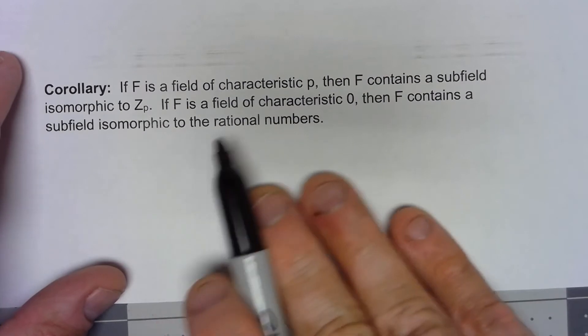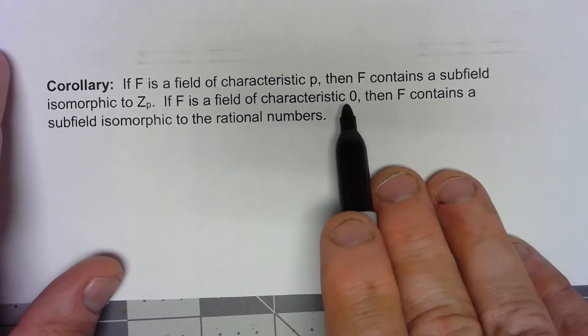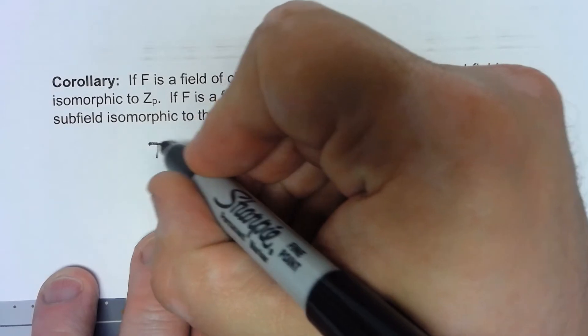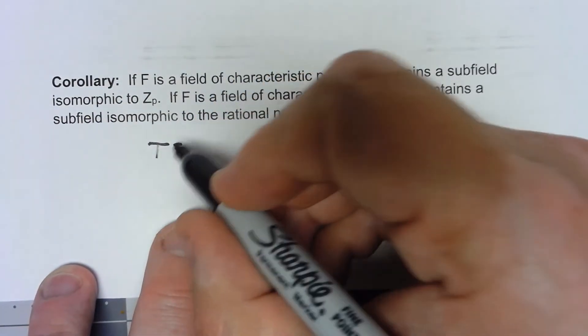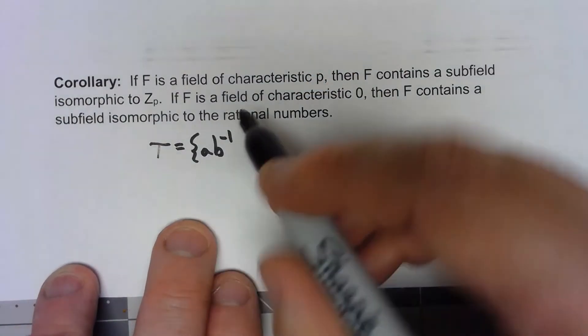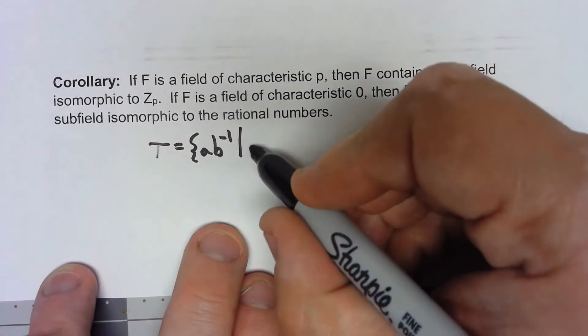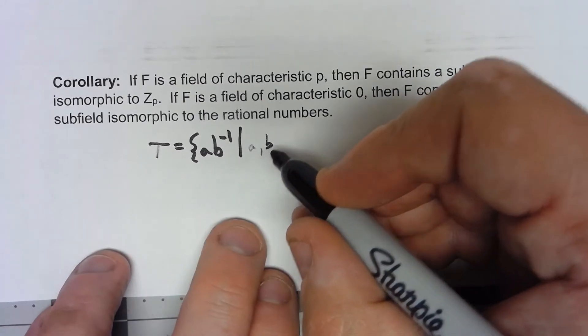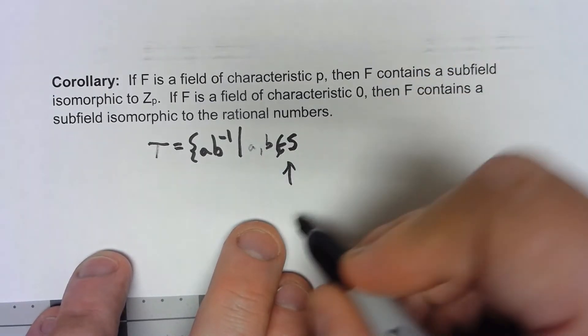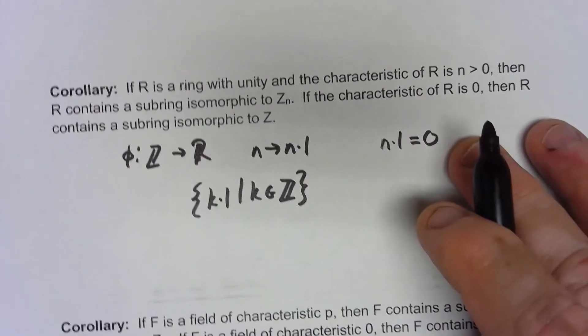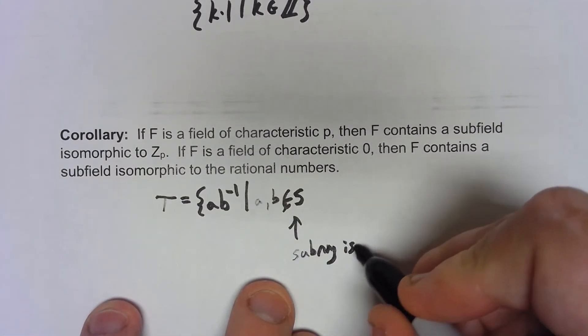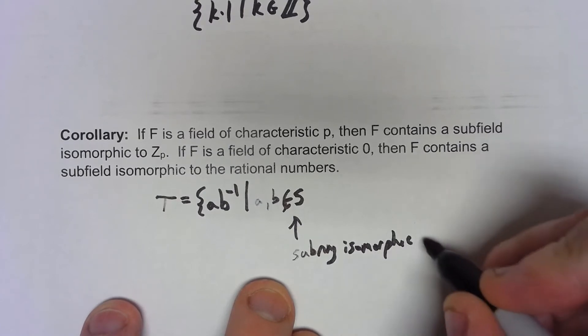Now, it's a little bit tougher if we've got a field of characteristic 0. What we have to do is say create a field as the set of all a times b inverse and we know we have inverses because we're working in a field such that a and b are in S. Where S is, again, pulling off the previous corollary, S is the subring isomorphic to Z.